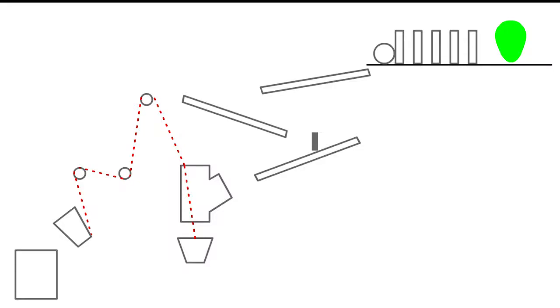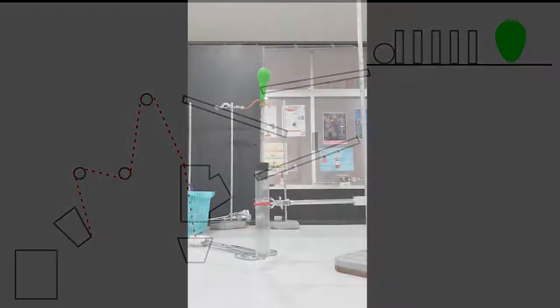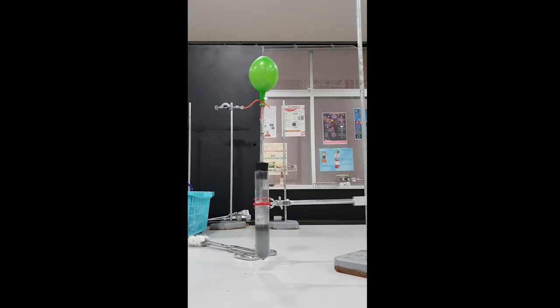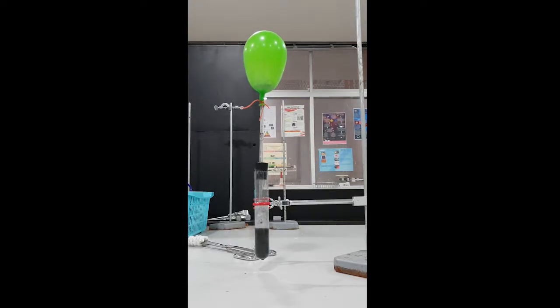Our Rube Goldberg machine will start with an explosion of a hydrogen balloon. A balloon will be filled with hydrogen gas produced from a chemical reaction between sodium hydroxide and aluminum.